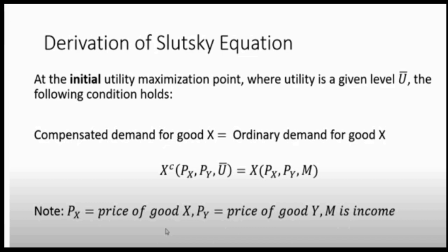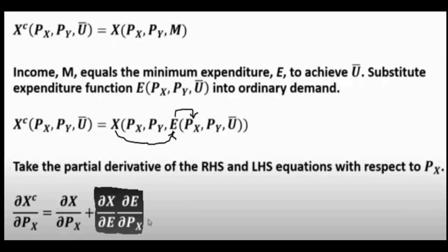We want to establish that at the initial utility maximization point, where utility is fixed at u-bar, the compensated demand function of good x equals the uncompensated demand function of good x. Here, px is the price of good x, py is the price of the related good y, u-bar is constant utility, and n is money income.